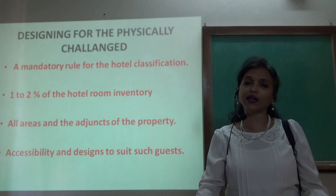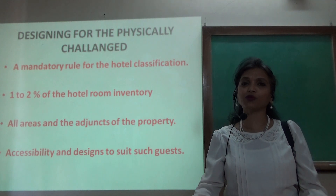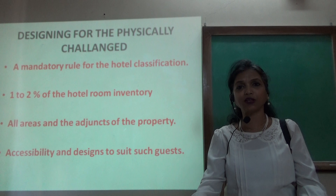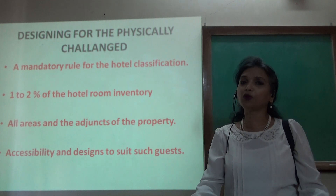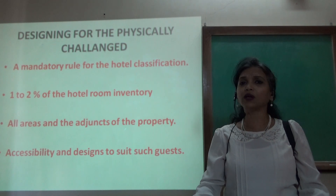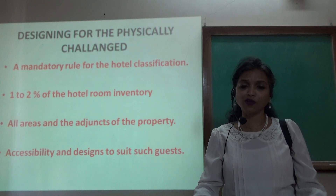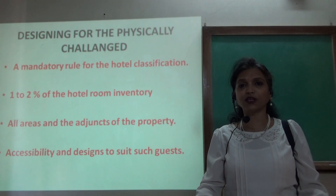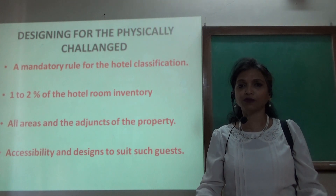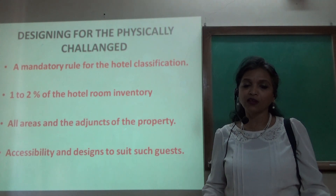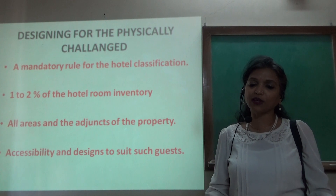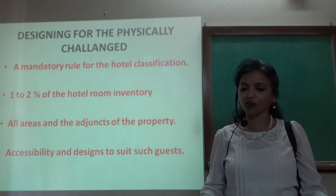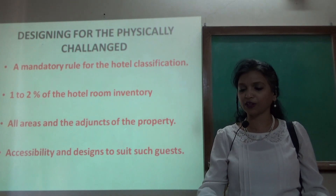all areas — right from the main porch to the lobby, to the guest rooms, to the elevators, to the swimming pool, bar, and all other areas — all facilities should have the same provisions for physically challenged guests. The accessibility and designs to suit such guests should always be provided by the hotel.